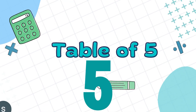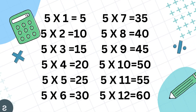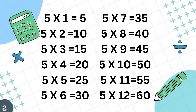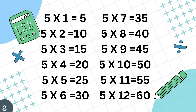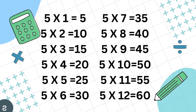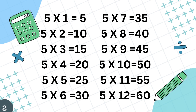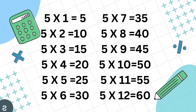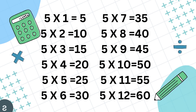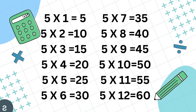Table of 5. 5 1's are 5, 5 2's are 10, 5 3's are 50, 5 4's are 20, 5 5's are 25, 5 6's are 30.